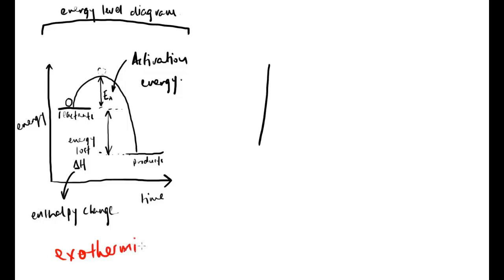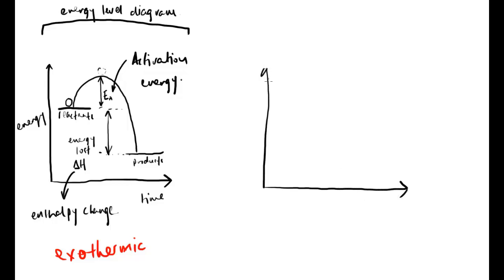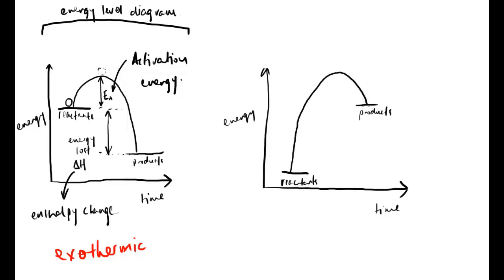All exothermic reactions will have energy level diagrams that look like that. The other way around — for endothermic reactions — is the complete opposite. Again with axes for energy and time, we are now putting energy in, taken in from the environment, which we see as a temperature decrease. So our reactants are down here and our products are at a higher energy level, because the energy comes from the surroundings and goes into the chemical reaction. This gives us our delta H — our enthalpy change — between the products and the reactants, which is now an energy gain.